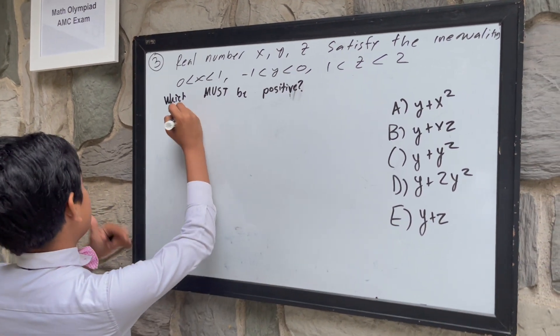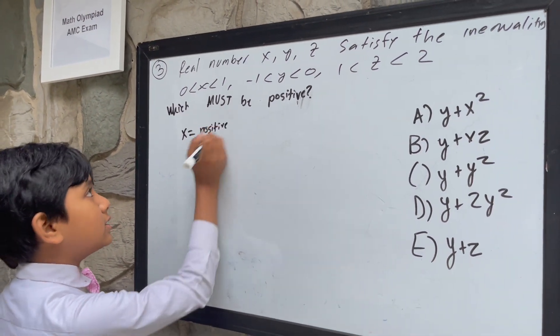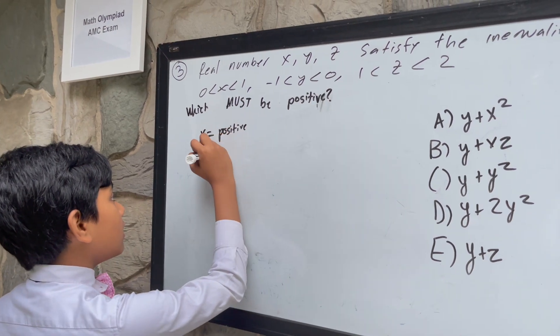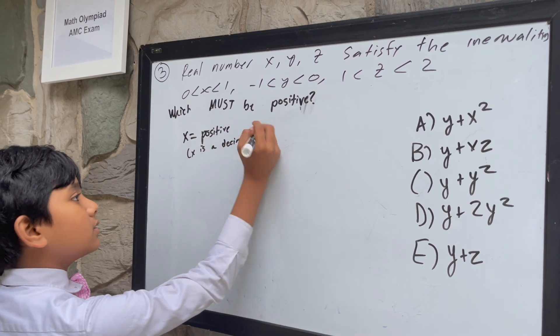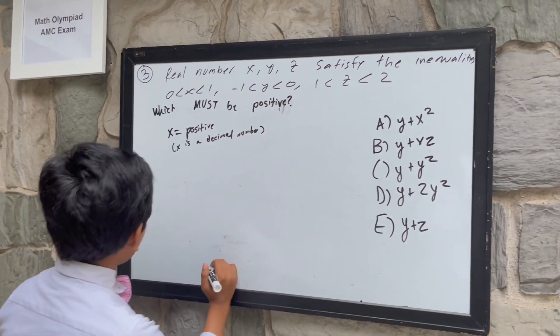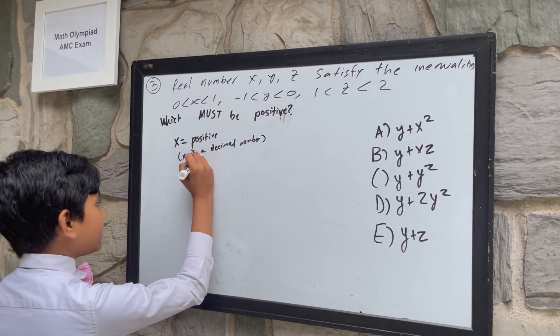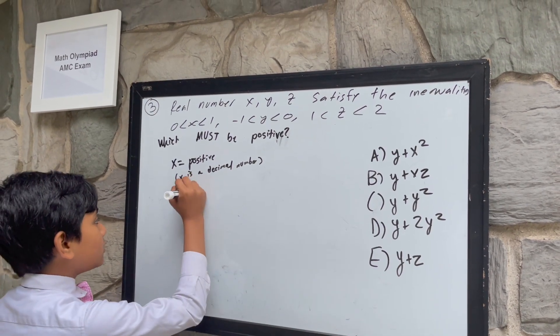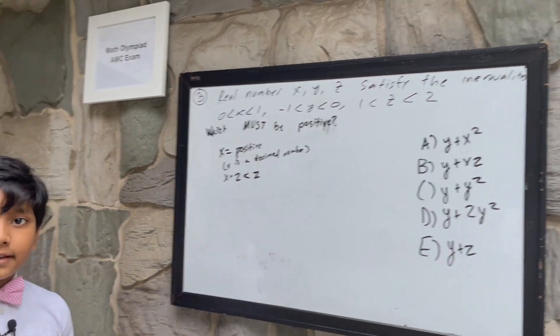First of all, we know that x is positive because it's greater than 0. However, x is a decimal number because it's less than 1. So that means that multiplying x by anything, multiplying x by z for example, will be less than z by itself. That's the thing.